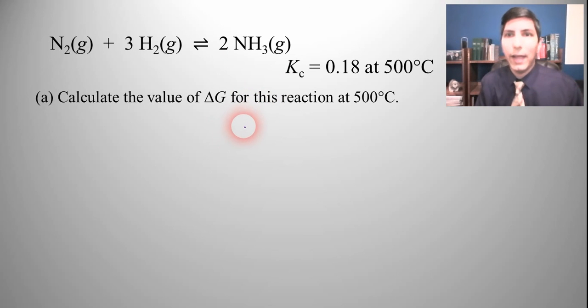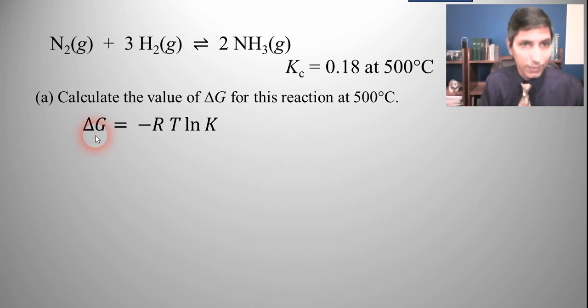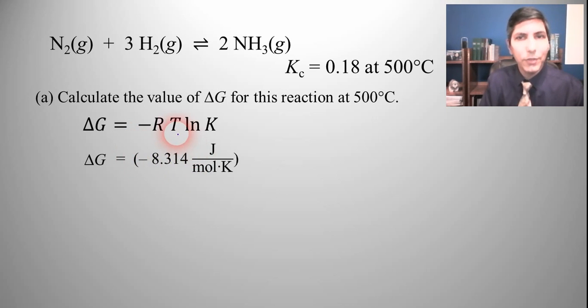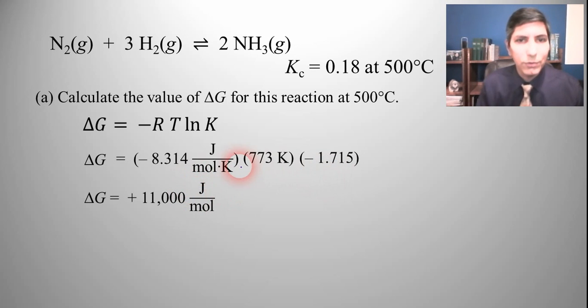Let's take this same reaction and calculate the value of delta G for this reaction at 500 degrees Celsius. We're going to solve for delta G. It's negative 8.314, the temperature is 500 degrees Celsius but convert it to Kelvin so that's 773. And the equilibrium constant is 0.18, but we have to take the natural log of that, so it's going to be negative 1.715. When we multiply these values across and solve for delta G, we find that delta G is 11,000 joules per mole, or positive 11 kilojoules per mole.